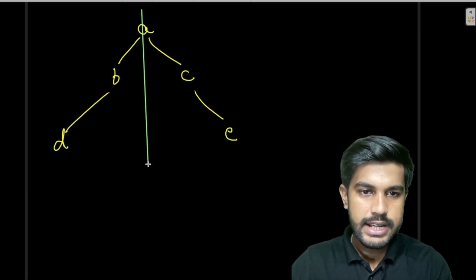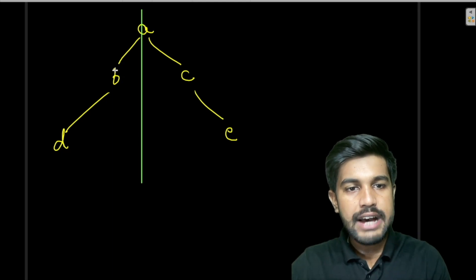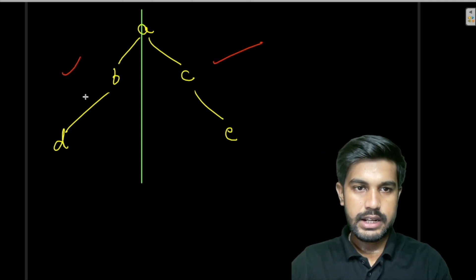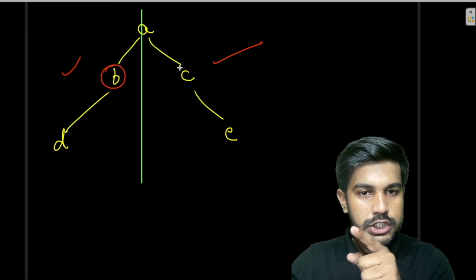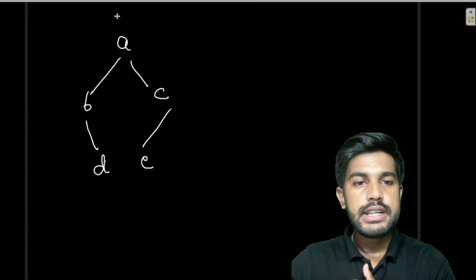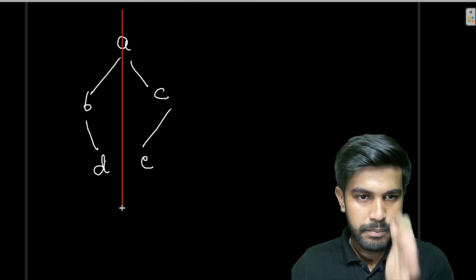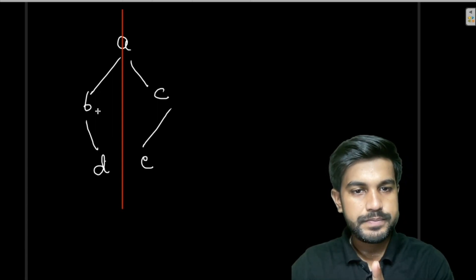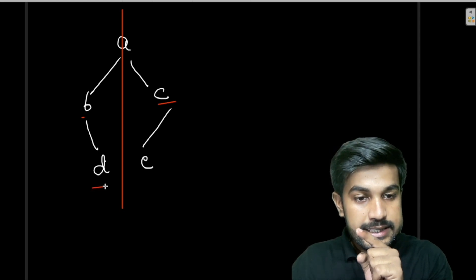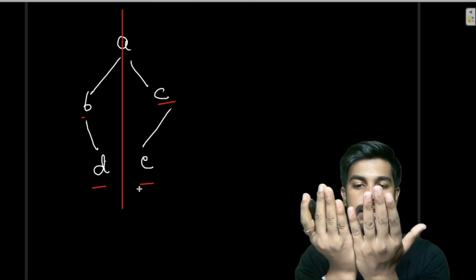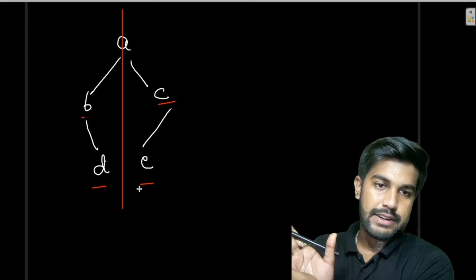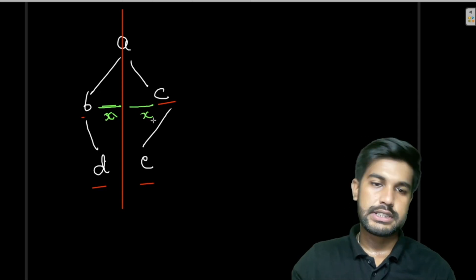Folded means if you overlap one side with the other, it should have the same structure. You can think of it as a mirror — this side should be a mirror of the other side. So if you bisect the tree from the root, for it to be foldable, the left side and right side should mirror each other. For example, if this side is farther away, that side should also be farther away. This is what makes a foldable binary tree.